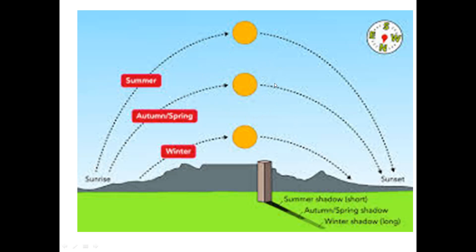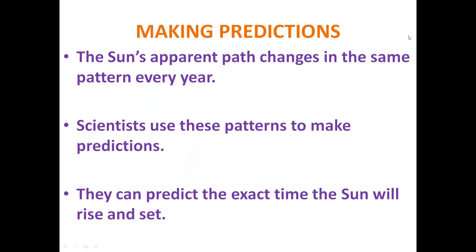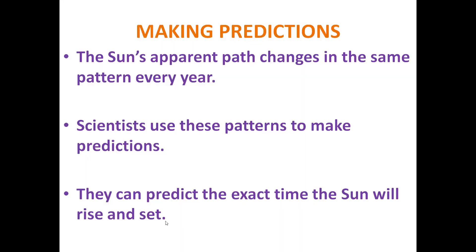This is an apparent motion — as we studied in the last session, this is just what appears to us from the earth; it is not the real motion. For making predictions: we know the Sun's apparent path changes in the same pattern every year, and scientists use these patterns to make predictions. They can predict the exact time the Sun will rise and set. This is the end of the topic — hope you understood it.